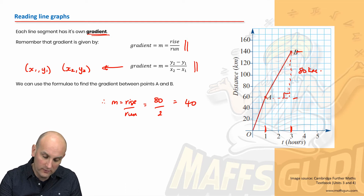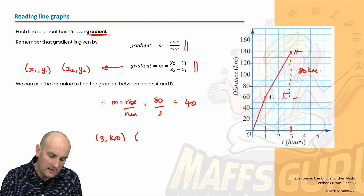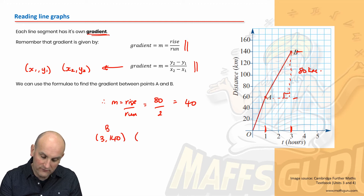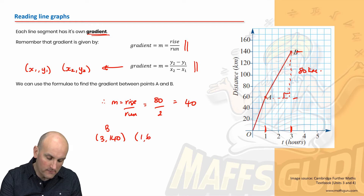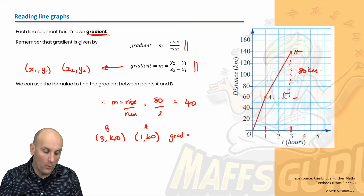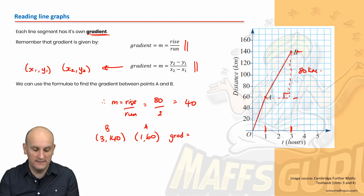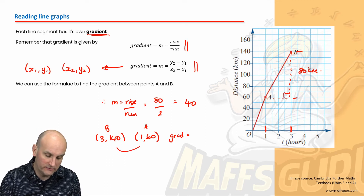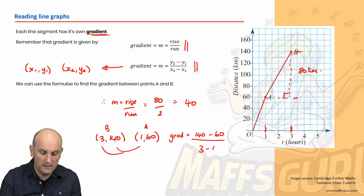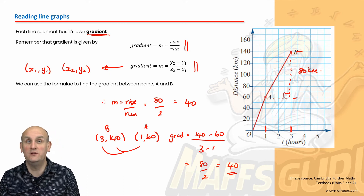What about if we did it the other way using coordinates? We know the coordinate for B is (3, 140) and the coordinate for A is (1, 60). So if I do my gradient using y2 minus y1 divided by x2 minus x1: 140 minus 60 divided by 3 minus 1 gives me 80 over 2, which is once again 40. Two different ways of doing it, and we can compare gradients.